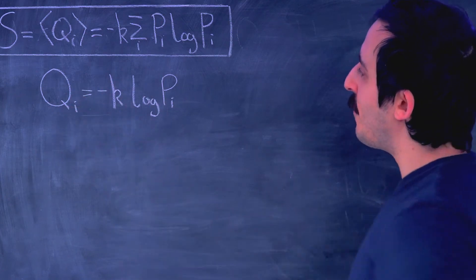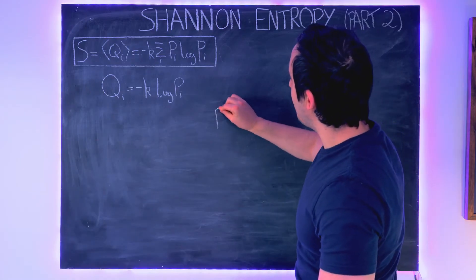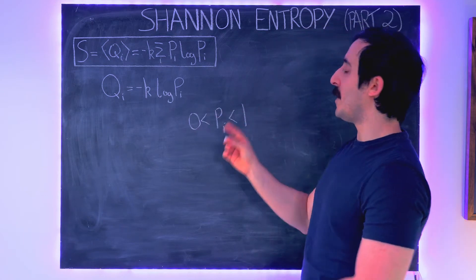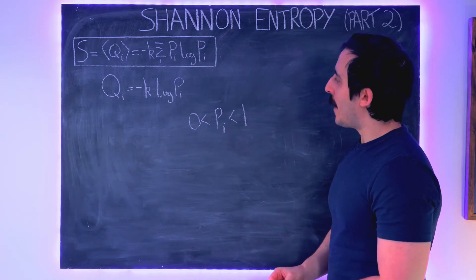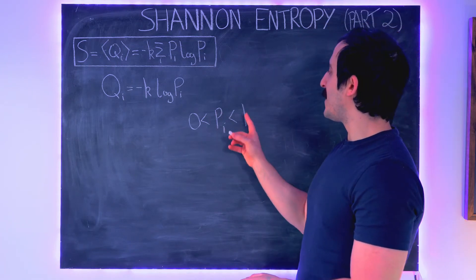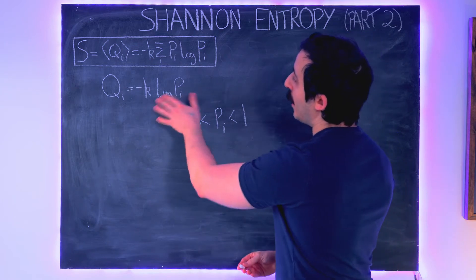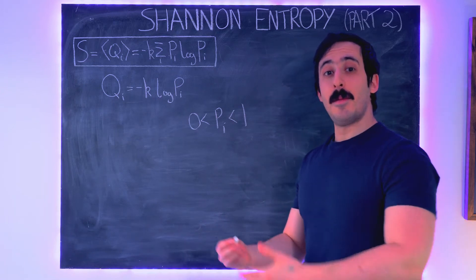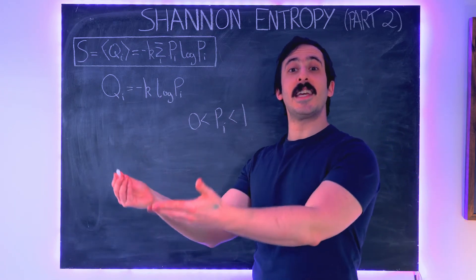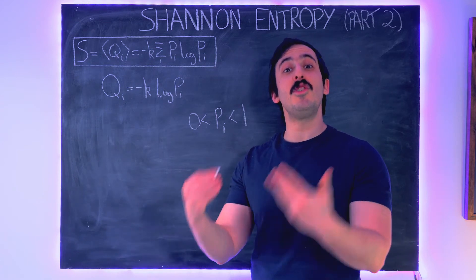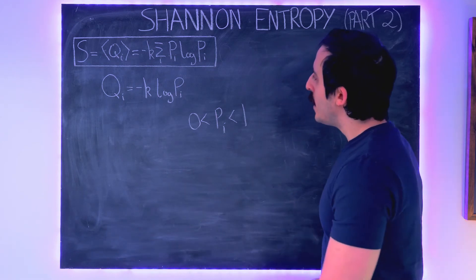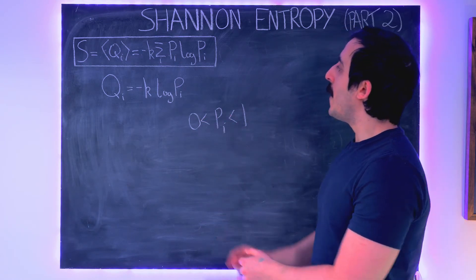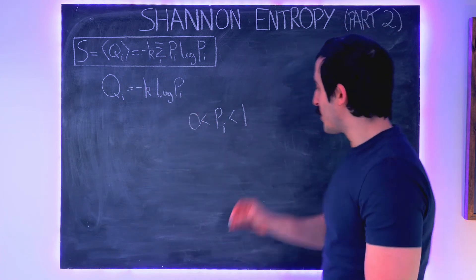So what can we say about this very briefly? A probability pi is always between 0 and 1. So 0 means it's never going to happen, and 1 means it's always going to happen. So if the probability is 1 — if something is absolutely certain — then log of 1 is equal to 0, so the information content is equal to 0. If someone tells us in advance that this thing is going to happen, there's no information for us there, because we knew it was going to happen anyway. So because p is a fraction between 0 and 1, that means that log p is always negative.